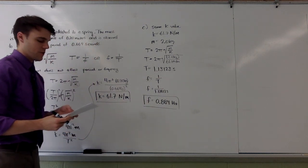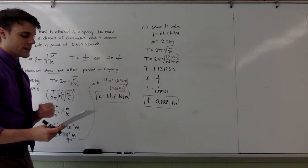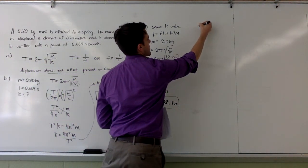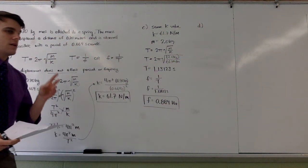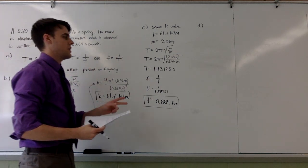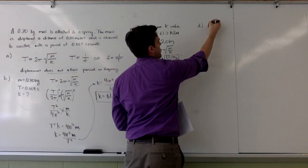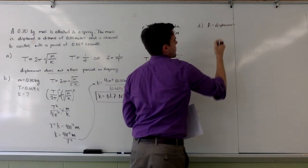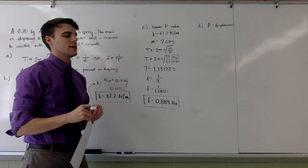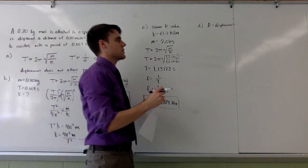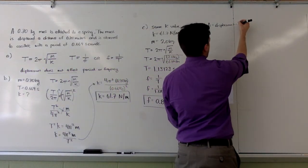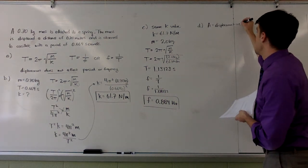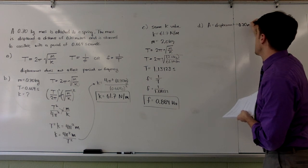Now, the last question asks you to plot the motion of the mass on the axes for exactly three periods. So, what information do I need in order to do that? I need amplitude and period. Amplitude in this case is equal to my displacement. Recall the definition of amplitude is displacement from the equilibrium position or maximum displacement.